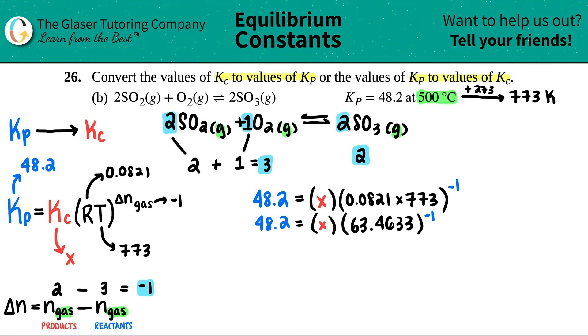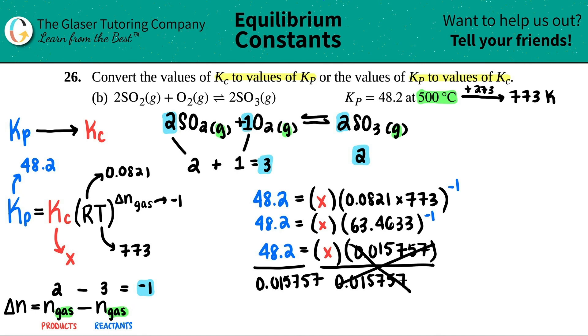Okay. It's getting a little smaller. So 48.2 equals the X. And then I raised it. So this would be 0.015757. And now just get X by itself. I'm just going to divide by that. And this cancels. Goodbye. And now we have our X value.